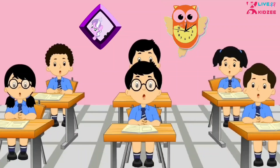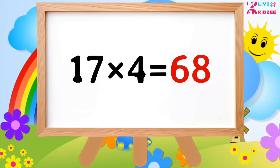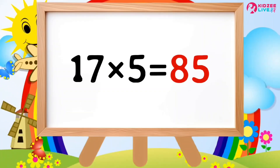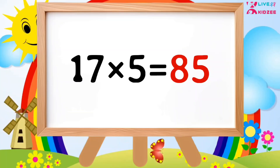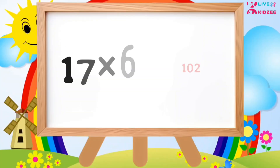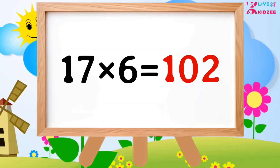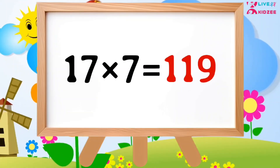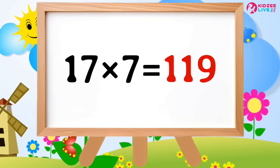17 3's a 51, 17 4's a 68, 17 5's a 85, 17 6's a 102, 17 7's a 119.